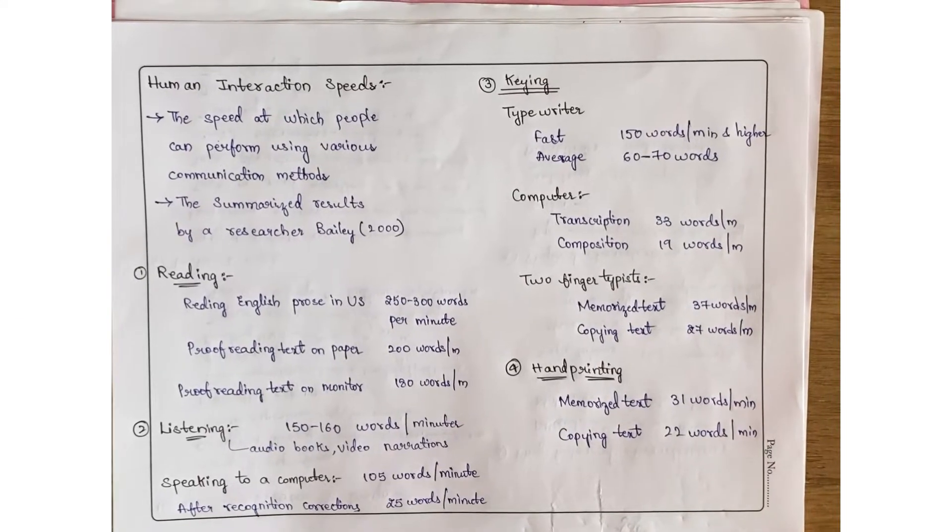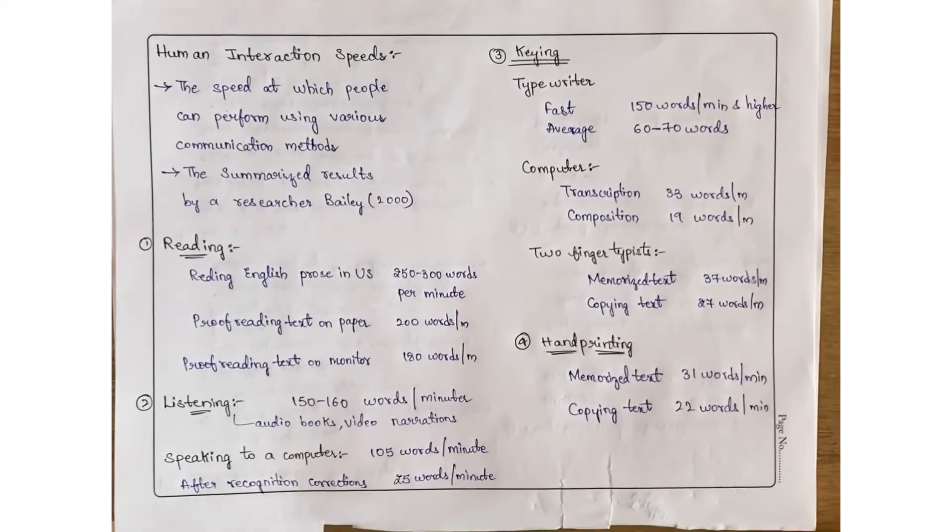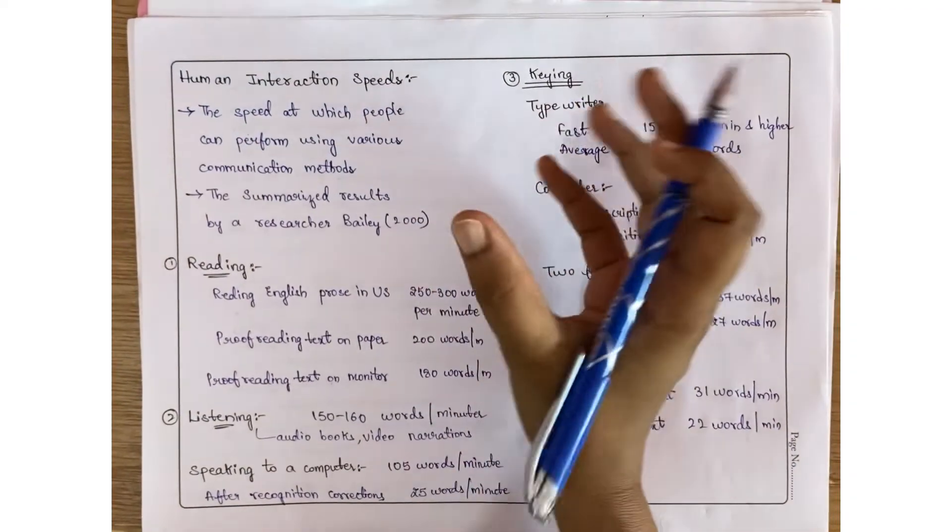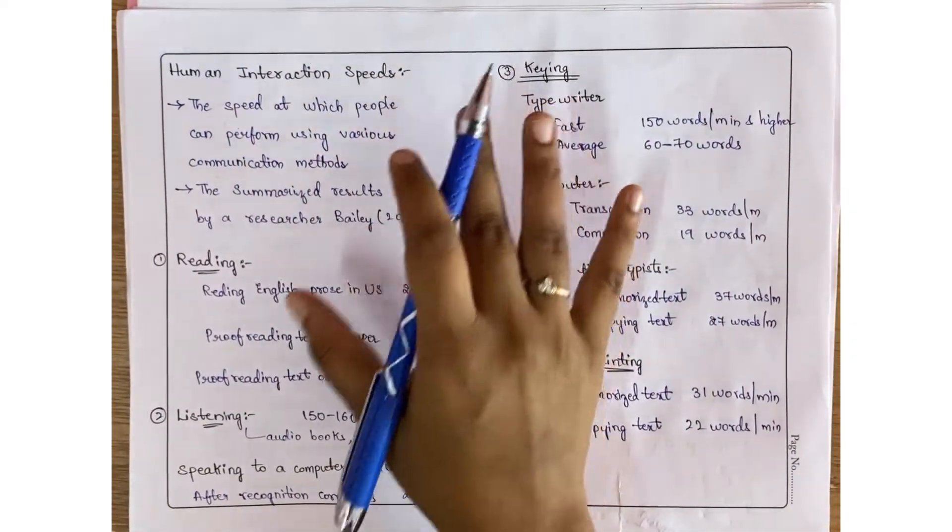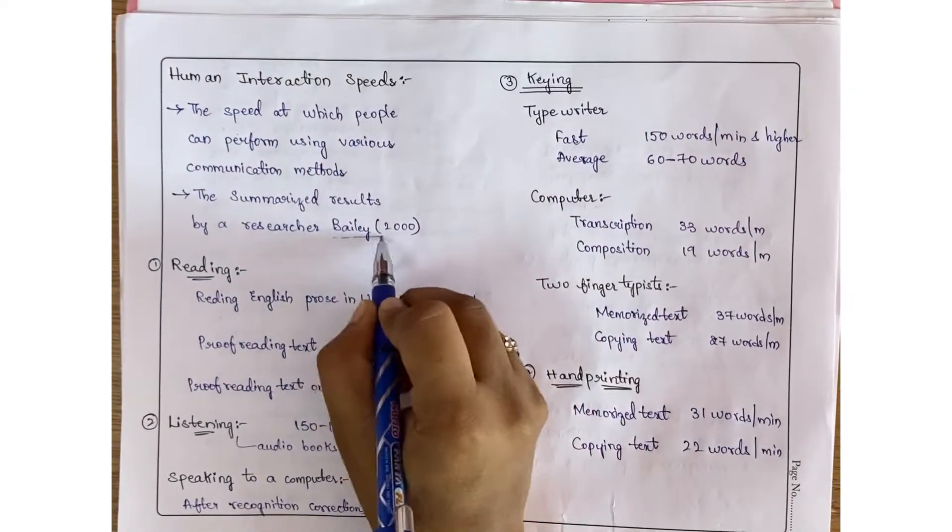Hi everyone, in this video I am going to explain human interaction speeds - the speed at which people can perform various tasks using different communication methods. This is a summary of research done by Bailey in 2000.